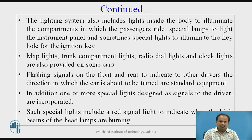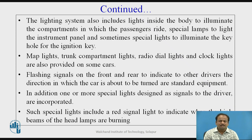Map lights, trunk compartment lights, radio dial lights, and clock lights are also provided on some cars. Flashing signals on the front and rear to indicate to other drivers the direction in which the car is about to be turned are standard equipment. In addition, one or more special lights designed as signals to the driver are incorporated, such as a red signal light to indicate the stop light beams of the headlamps.